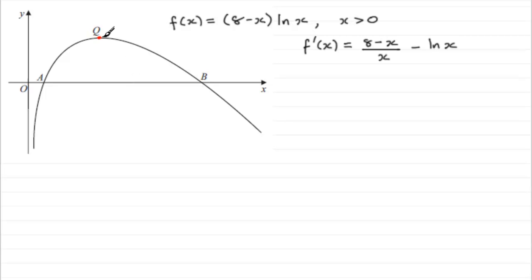what we do is we know that at Q, we're told it's a maximum point, so we know that if we were to draw a tangent at Q, the gradient of that tangent would be zero. And gradient is given by dy by dx, or in this case, f'(x). So we do know that at Q, f'(x) must equal zero.